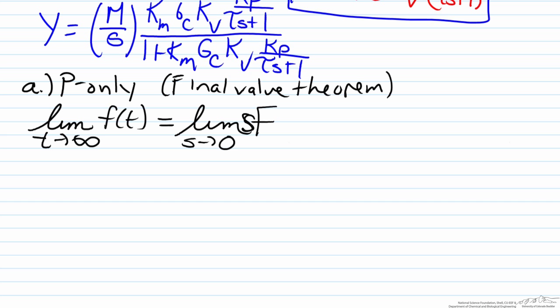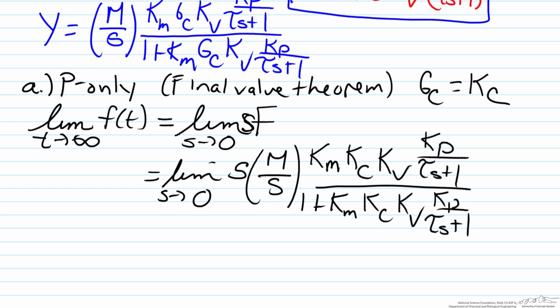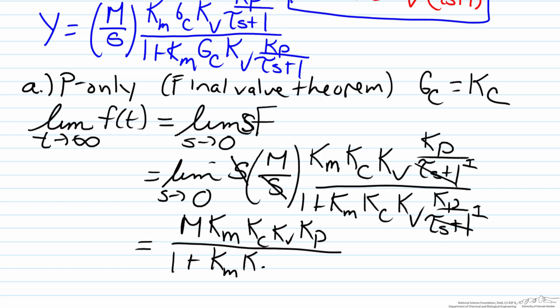So here for a P only controller what that means is that Gc will equal Kc. That means that our function will be the limit as s approaches zero of s multiplied by our function. What we will notice here is that the s's cancel and that both tau s plus ones will go to one. So therefore this leaves us with the final value here as M Km Kc Kv Kp divided by one plus Km Kc Kv Kp.